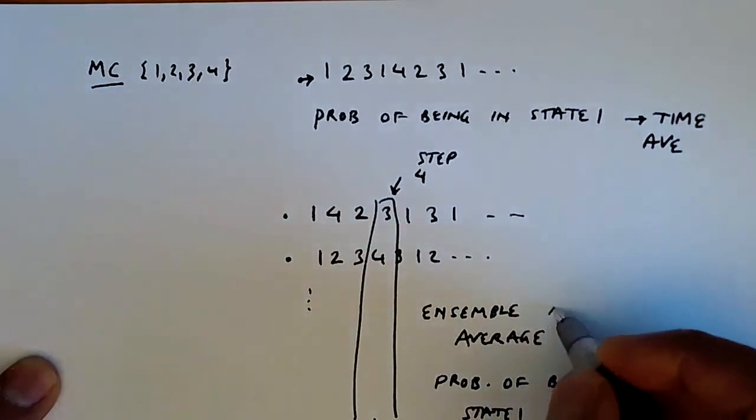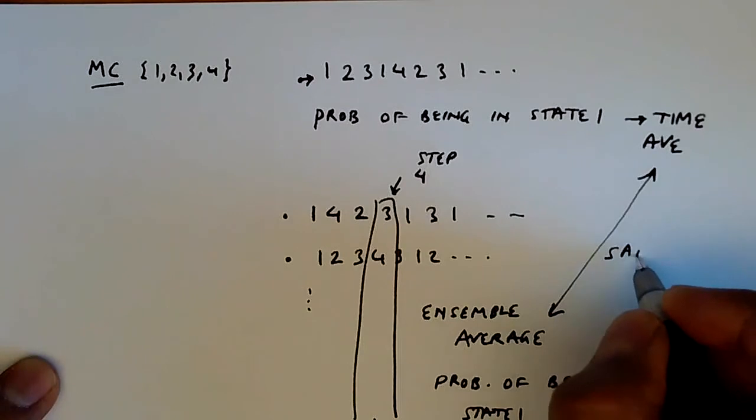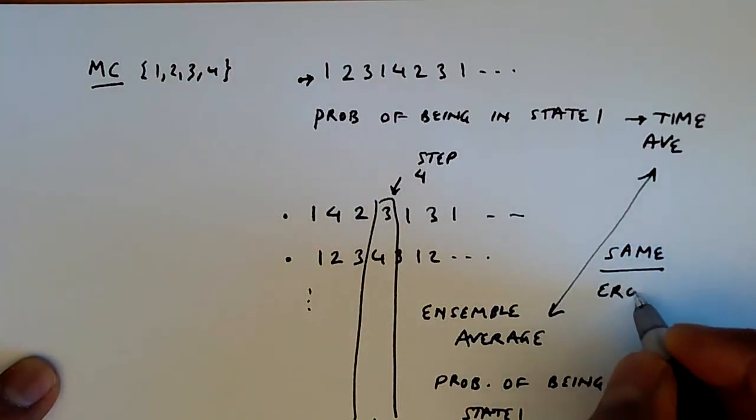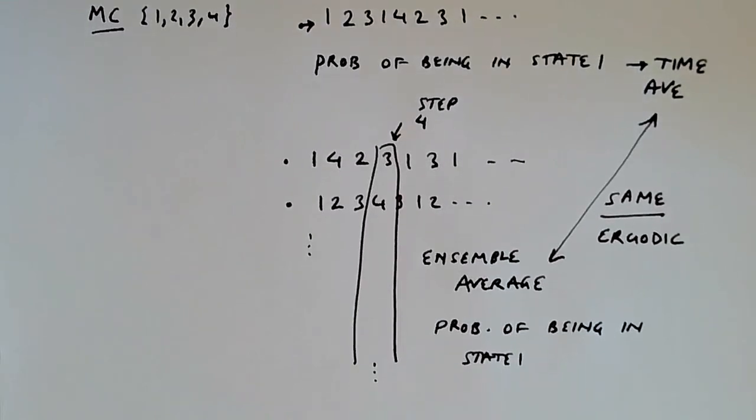This is the time average. If this ensemble average and the time average are the same, then the trajectories come from an ergodic Markov chain. Whereas if these two come from a non-ergodic Markov chain, then these averages aren't the same.